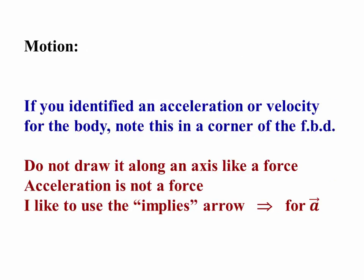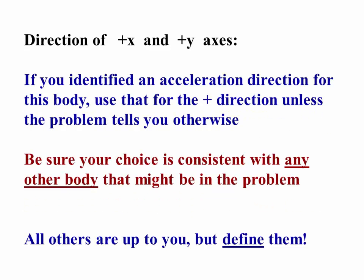If you identified an acceleration or velocity, note this also in the corner of the free body diagram. You don't want to draw it along an axis like a force because acceleration is not a force. I like using the little implies arrow to indicate an acceleration and I always draw it up in a corner well away from the rest of the free body diagram just as a notation to remind me of which way something might move.